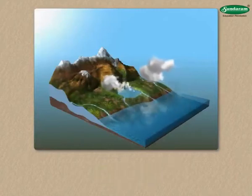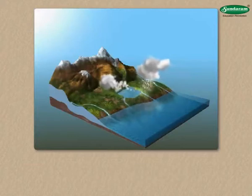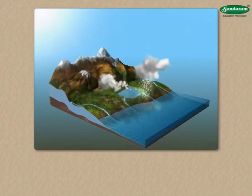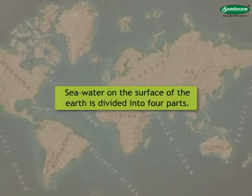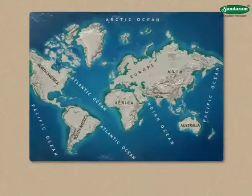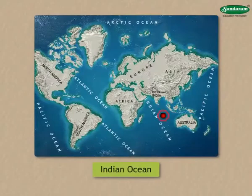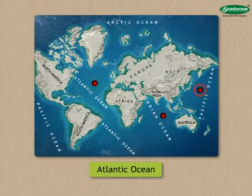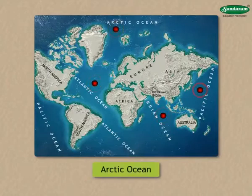The water we get in the form of rain comes from the ocean in the form of vapour. Because of the continents, the seawater on the surface of the earth is divided into four parts. They are the Indian Ocean, the Pacific Ocean, the Atlantic Ocean and the Arctic Ocean.